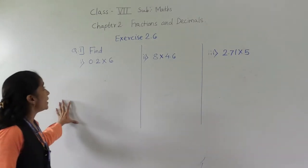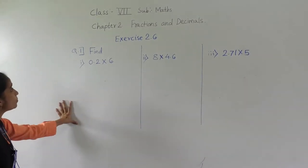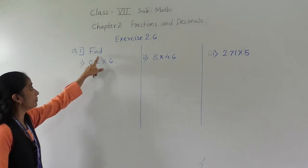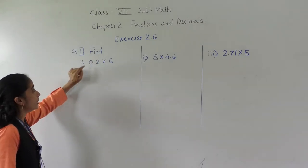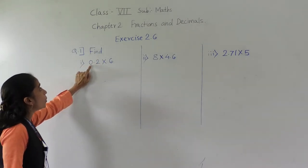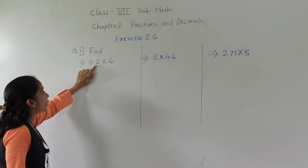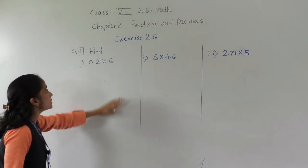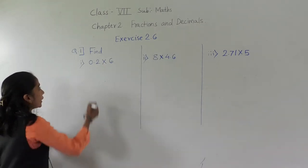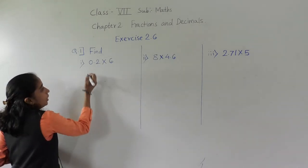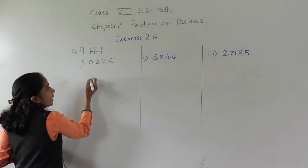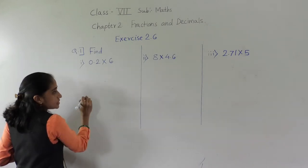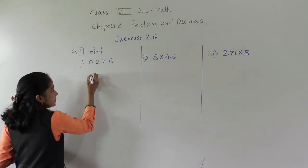Let's solve exercise 2.6, question number 1. Now, 0.2 multiplied by 6. See here what we can do — without the decimal point we can write this number and multiply it.